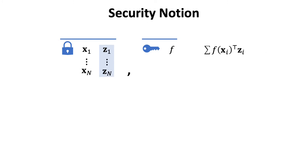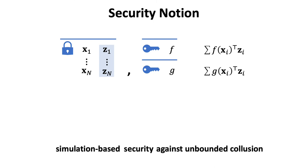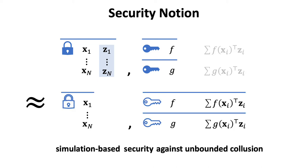Now let me be more formal about the security notion. We want a secret key for f to only leak the attribute weighted sum with respect to xi, zi, and f, but keep other information on zi secret. This is formalized as simulation-based security against unbounded collusion. The adversary is allowed to see the master public key, one ciphertext, and an unbounded number of secret keys. They can recover the attribute weighted sum regarding f and g respectively. The security means that the adversary's view is indistinguishable from one where the ciphertext does not contain any information about zi, and the attribute weighted sum with respect to f and g is embedded into the corresponding key.